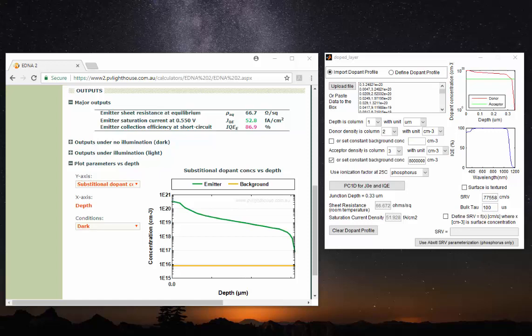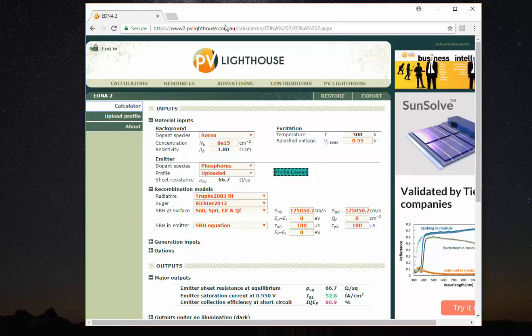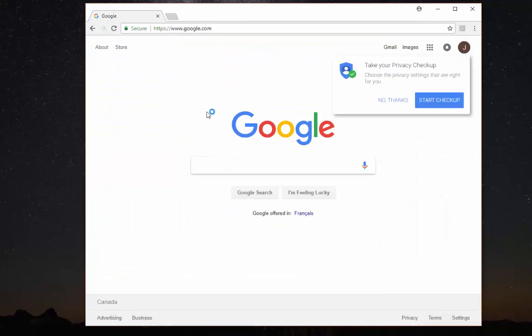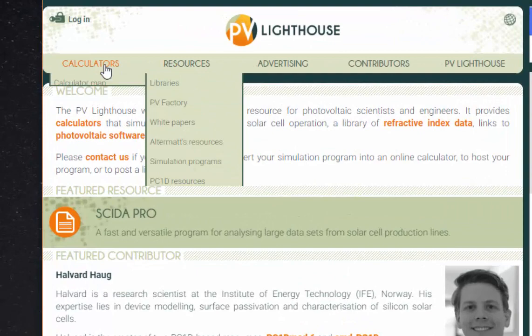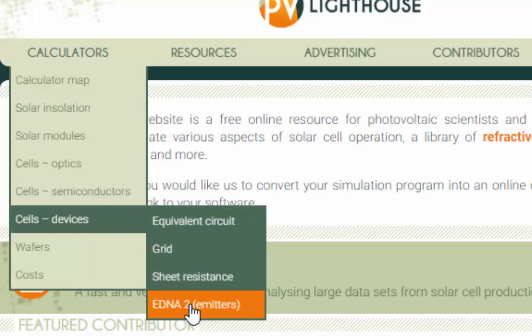So first thing first, I just want to get you very quickly familiarized with the procedures of using both of these tools. So let's do Aetna 2 first. Now, this is a web-based tool, so if you're on Google, look for PV Lighthouse. We go to Calculators, and under Sales Devices, we have Aetna 2.